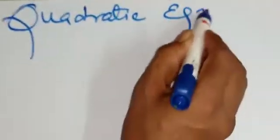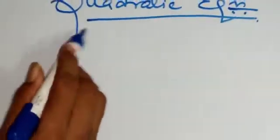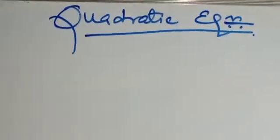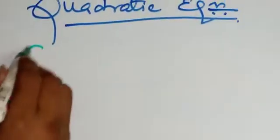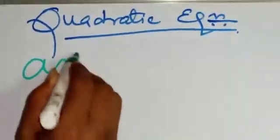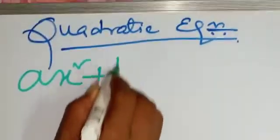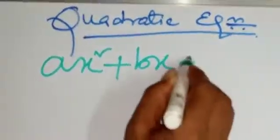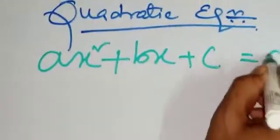Today, I will discuss about quadratic equation. The standard formula of quadratic equation is ax square plus bx plus c equal to 0.